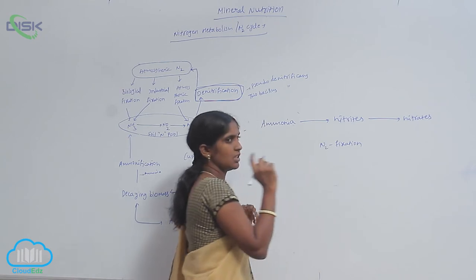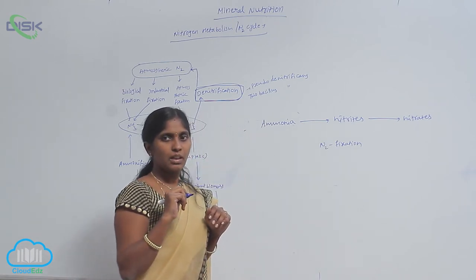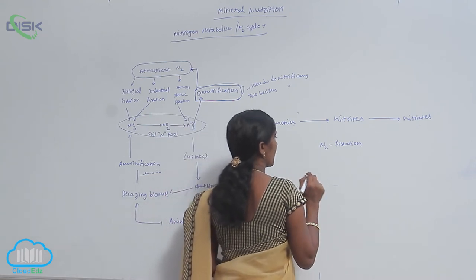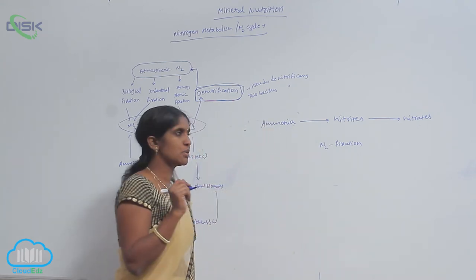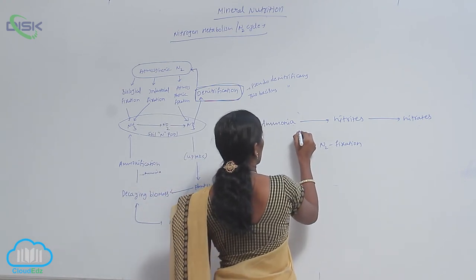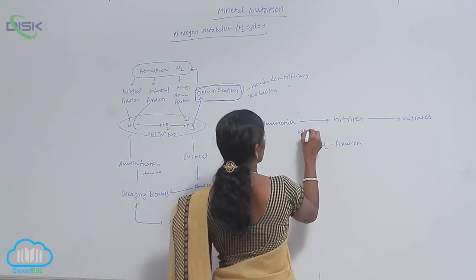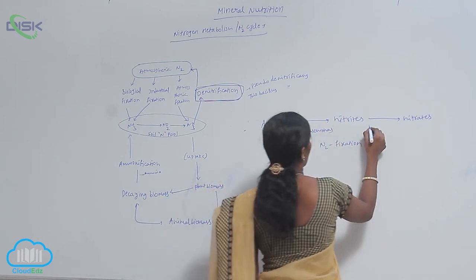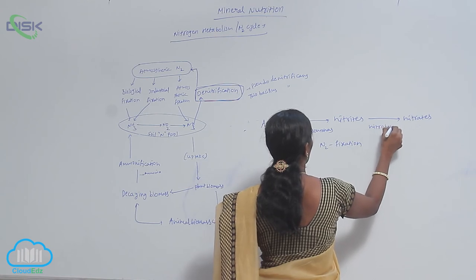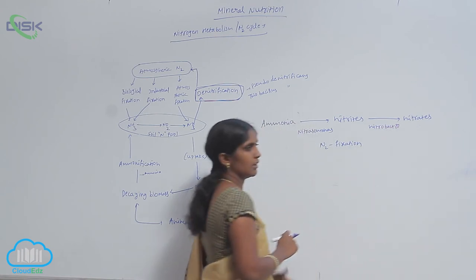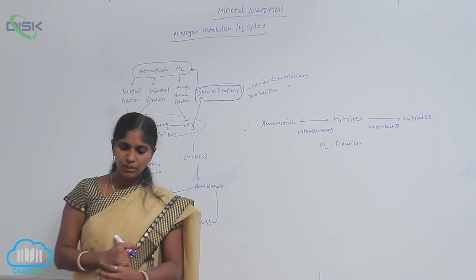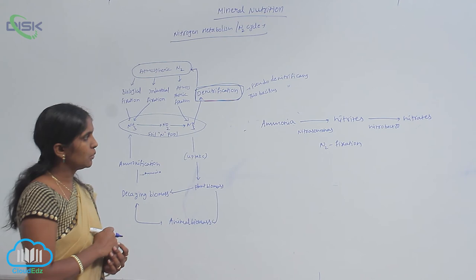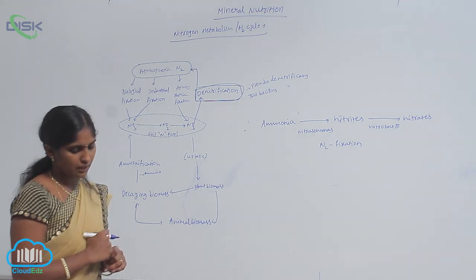These reactions are mediated by microorganisms. They are chemoautotrophs: Nitrosomonas and Nitrobacter. These two work for conversion of ammonia to nitrites, and nitrites to nitrates.